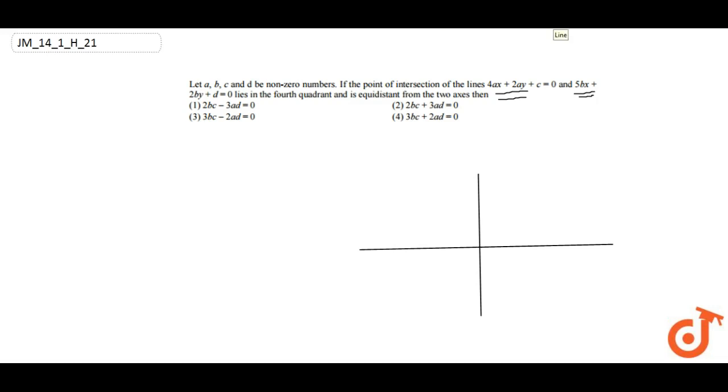Let these two lines intersect at this point. It is saying this point is equidistant from both the axes, so this distance and this distance will be x. So this is also x.